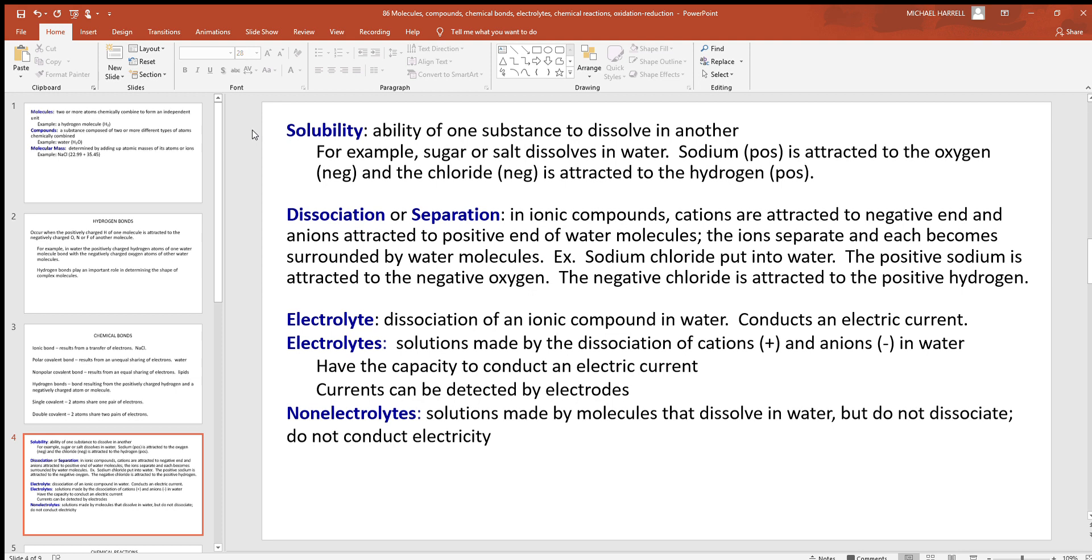Dissociation or separation. In ionic compounds, cations are attracted to the negative end and anions are attracted to the positive end of water molecules. Just like with salt as we mentioned before. An example again, putting that sodium and chloride into the water. The sodium and chloride separate. That's dissociation. They separate from each other because they're more strongly attracted to the positive negative ends of the water than what they are to each other.